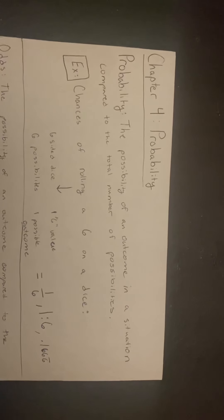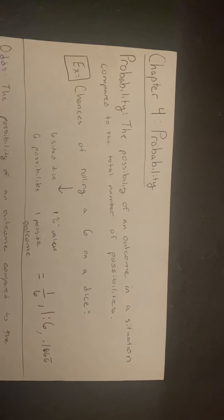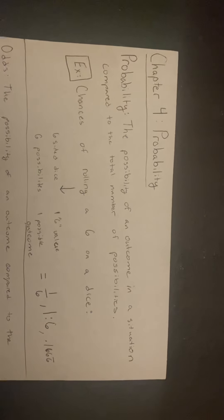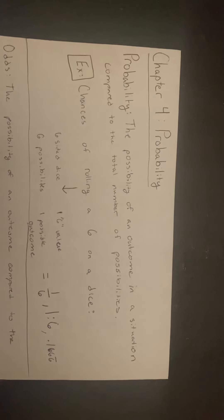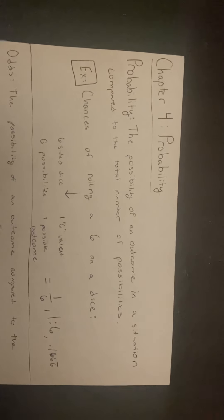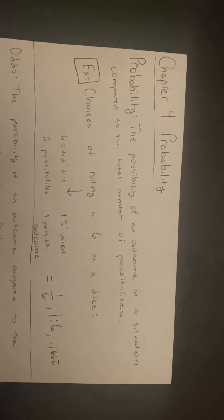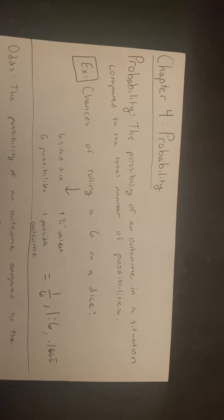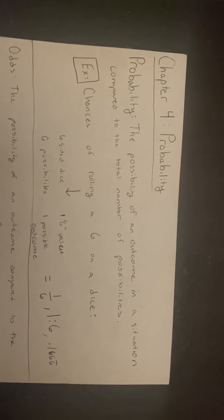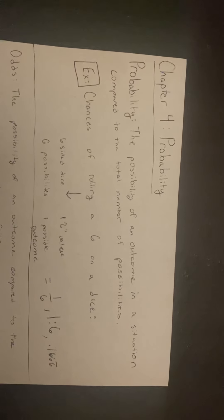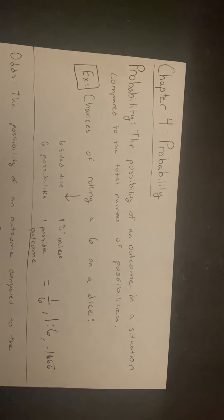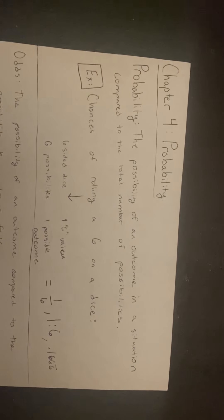Probability is defined as the possibility of an outcome in a situation compared to the total number of possibilities. In my example, I have the chances of rolling a 6 on a dice. The number 6 is labeled on one side of the 6-sided dice.